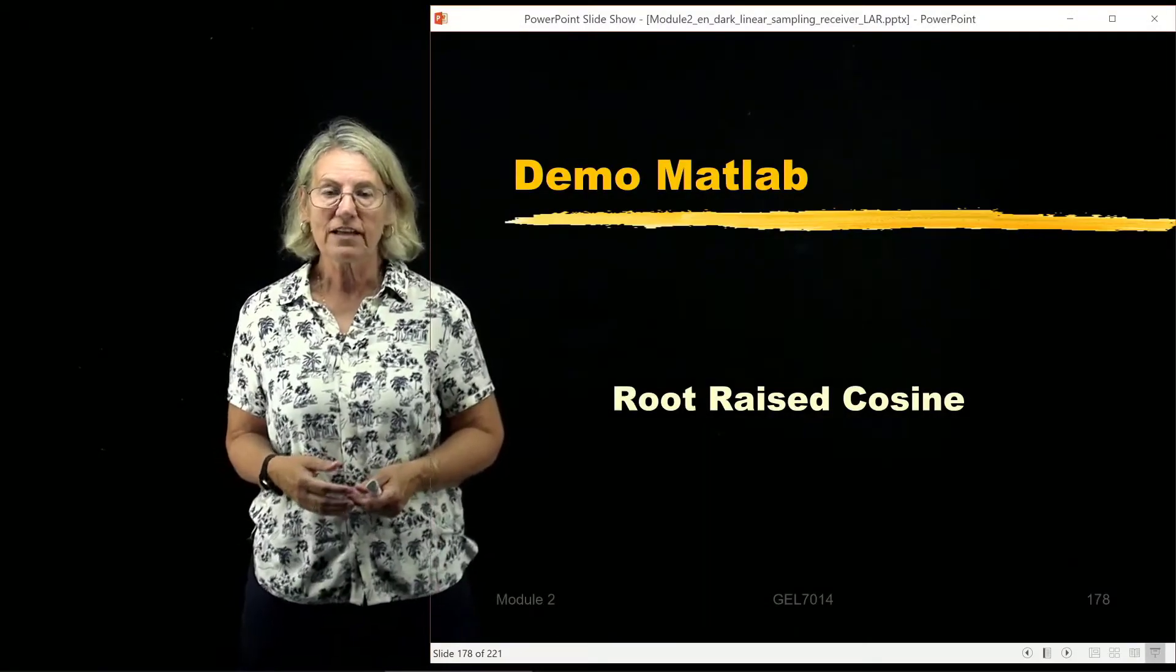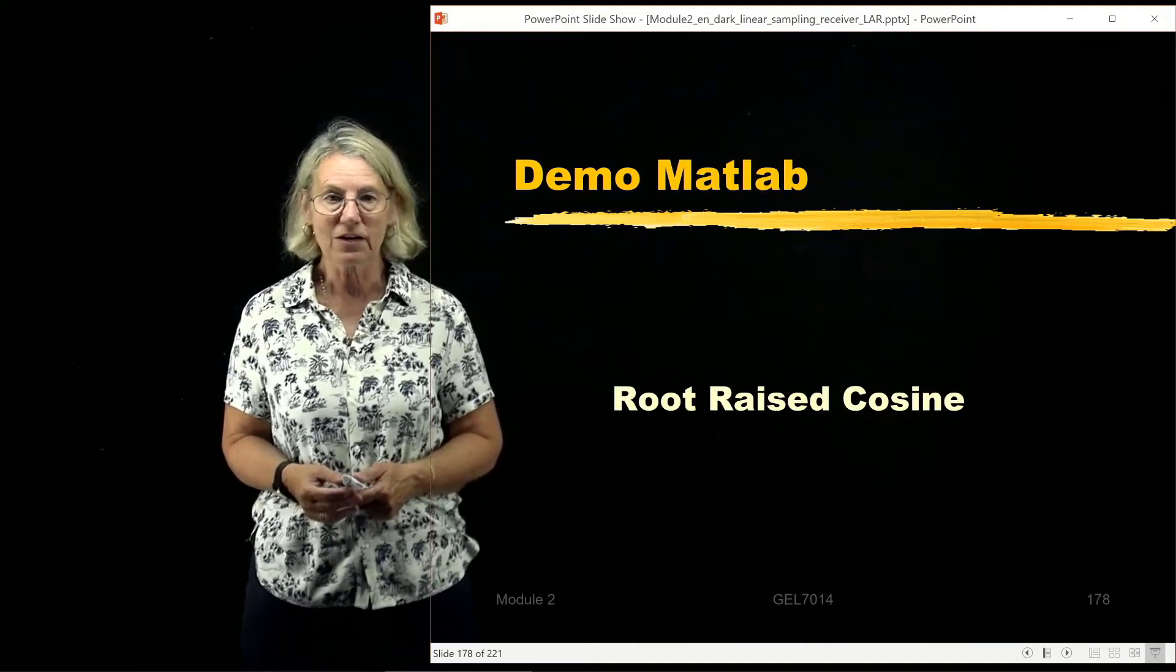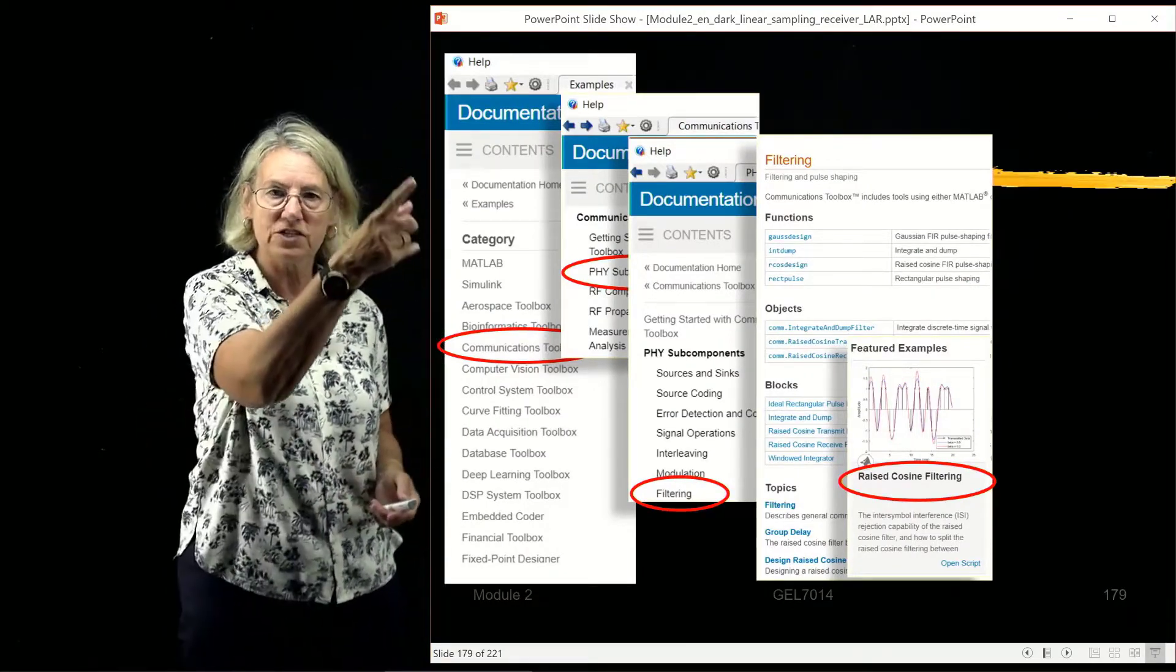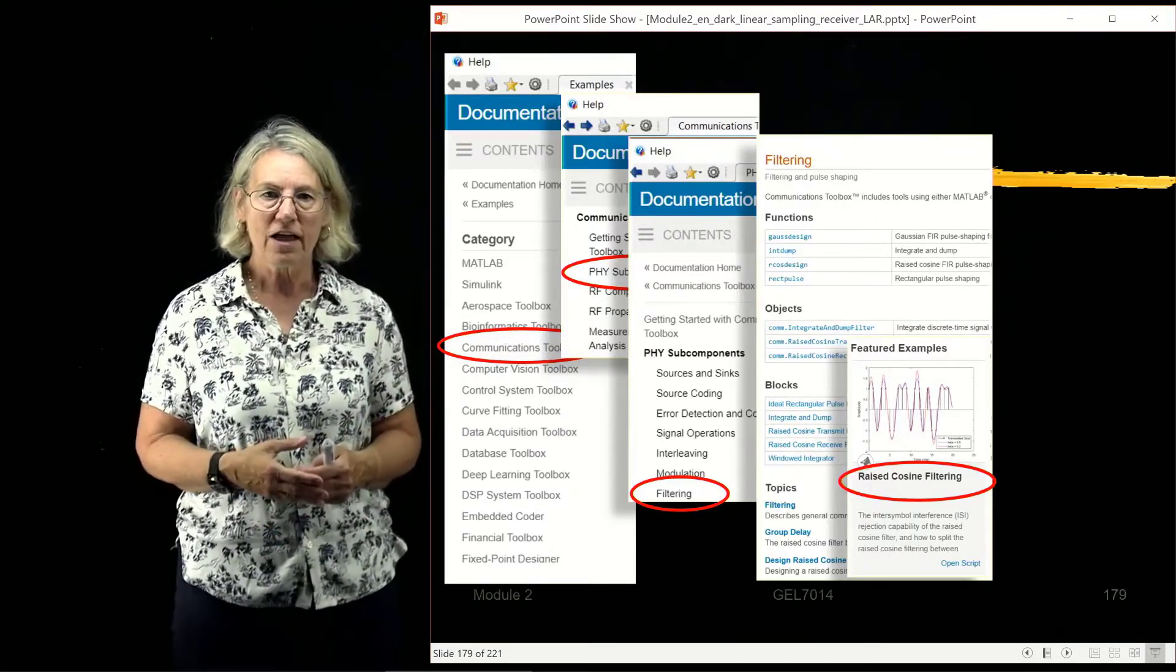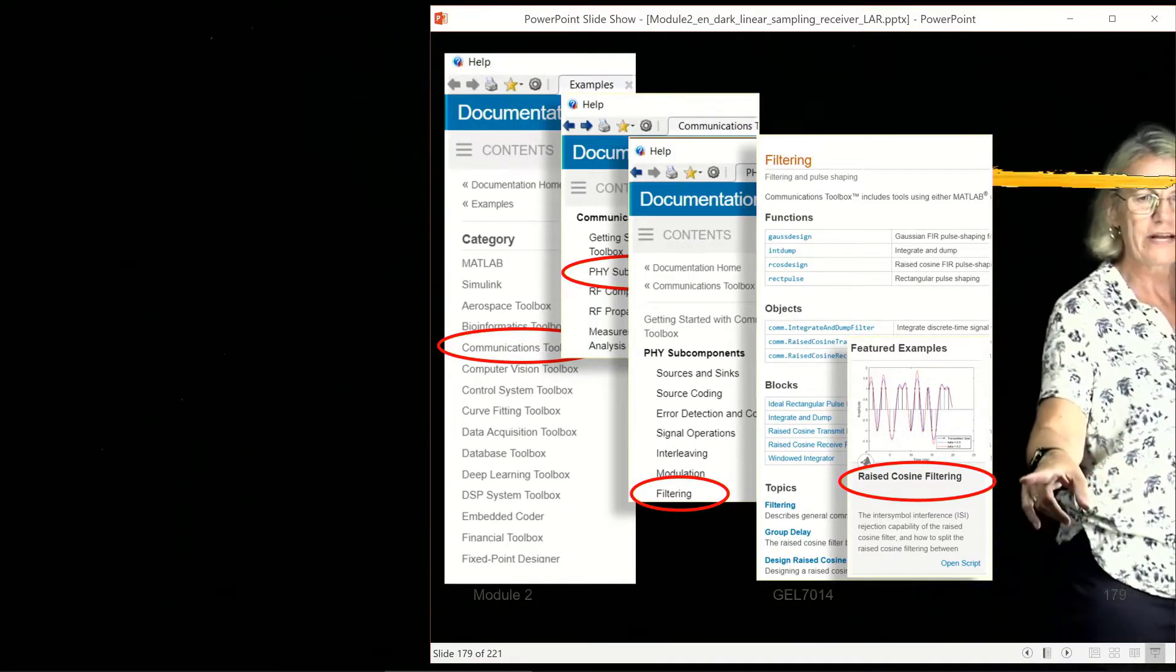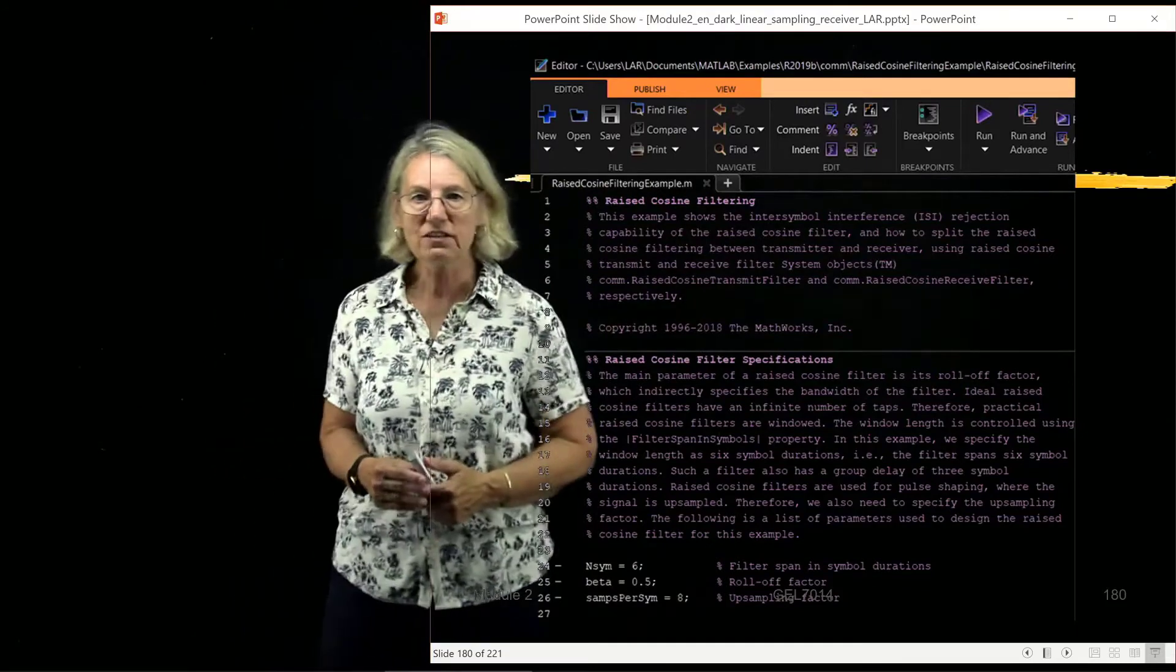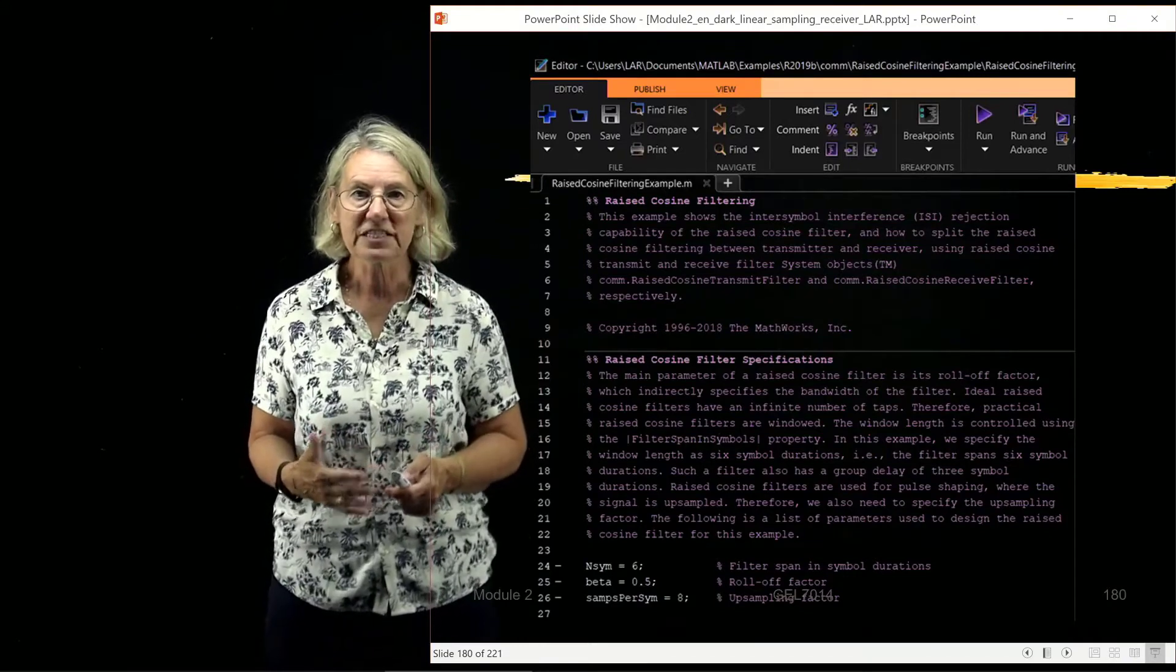Now I'm going to use a demo available in MATLAB to describe some of the issues in implementing and simulating a root-raised-cosine filter. If you go into the MATLAB command for demonstrations and you go into the section on communications toolbox and choose the physical layer and then the filtering choice, you'll be able to come down here to the raised-cosine filtering example that I'll be showing you.